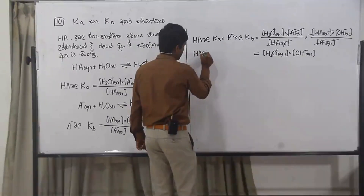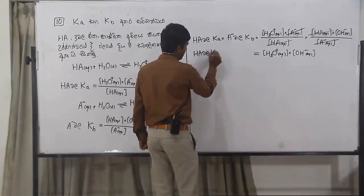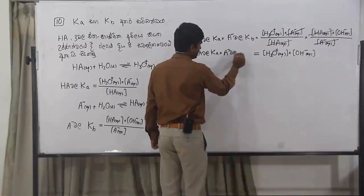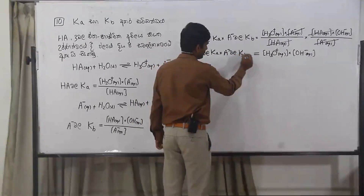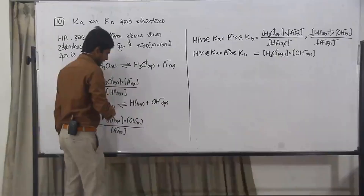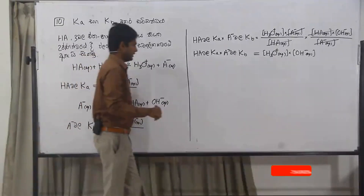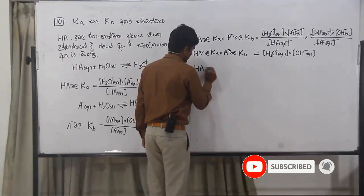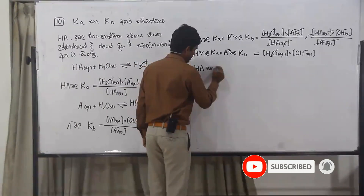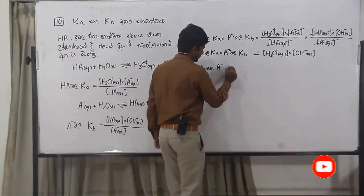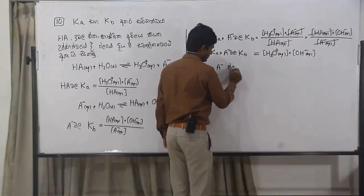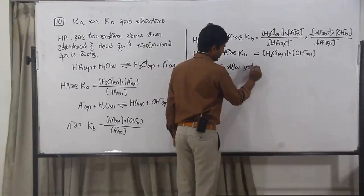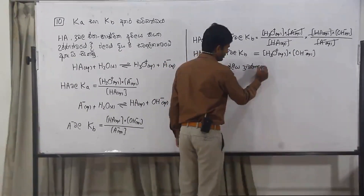B is HA and A is Kb. So HA is HA. HA times HA — B is HA.